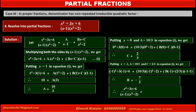Therefore, the given fraction (x² + 3x + 6) / ((x - 1)(x² + 2)) equals (10/3)/(x - 1) + (-7x - 2) / (3(x² + 2)). Replacing A = 10/3, B = -7/3, and C = 2/3, the second term becomes -(7x + 2) / (3(x² + 2)).